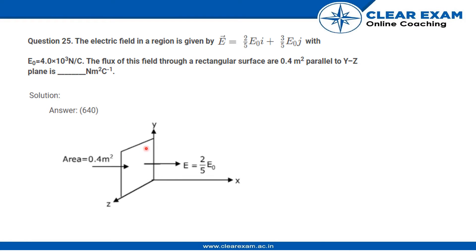So what the question is saying is that there is a sheet in the YZ plane and it is asking us the flux through this sheet. The electric field is now given to us and area is also given.